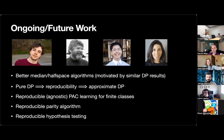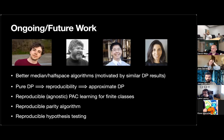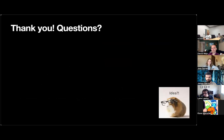Also, reproducible hypothesis testing: I started this talk by discussing the replication crisis in the sciences, but haven't said much about statistical inference broadly. I think we should be able to do something with frequentist hypothesis testing, where reproducibility would mean that the decision to reject or fail to reject the null is reproducible over different samples — guaranteeing that when we publish scientific results, we didn't just get lucky with a statistical fluke that let us find something statistically significant that isn't actually statistically significant. That's all I have for you today, and I'm happy to take any questions.